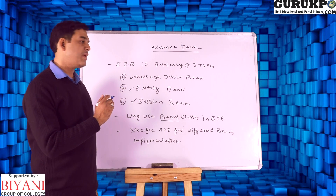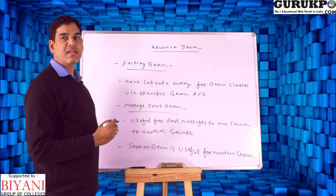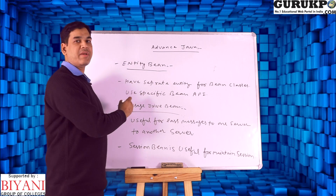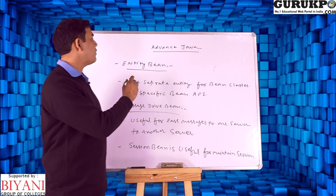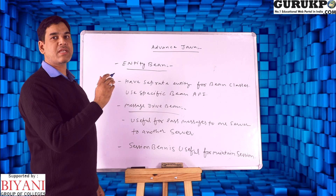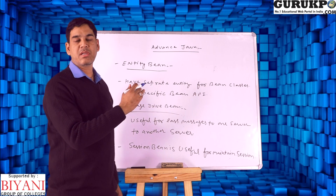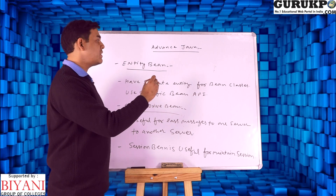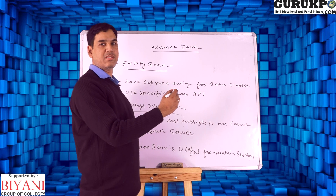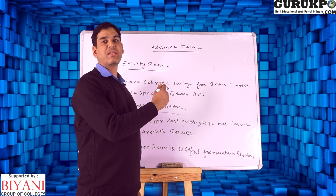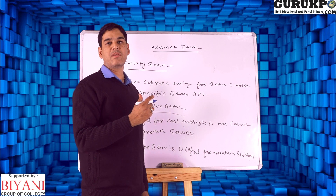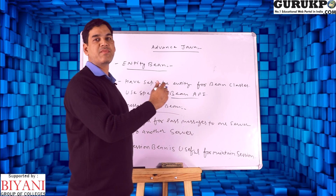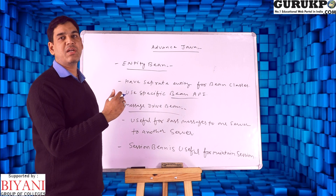These three types of beans are supported by Enterprise Java Beans. We use specific types of APIs for different bean implementations. Regarding entity beans: we have a multi-tier architecture with multiple layers, and these layers have separate entities. These entities have different bean classes, which handle specific functionality and send requests to particular EJB APIs, then to the specific EJB server.